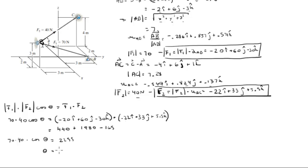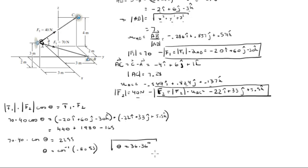So you get that 70 times 40 times cosine of theta equals 2255. Solving for theta, you get cosine of theta equals 0.8053, and theta is finally equal to 36.36 degrees. That's the angle between the two forces, which is the answer to the first problem.